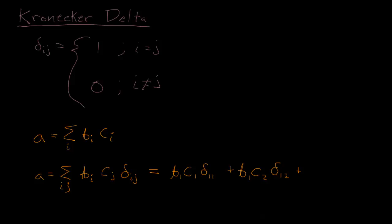Let's add the i equals two, j equals one term, so b2, c1, Kronecker delta δ21.